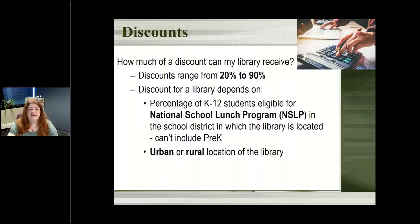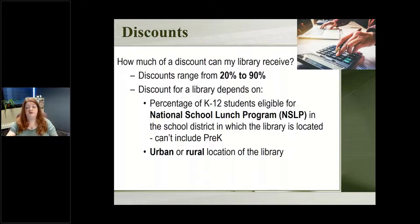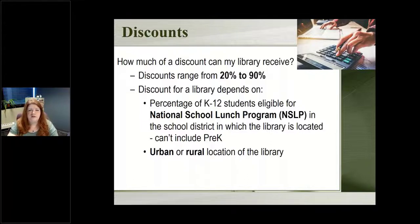So how much of a discount can your library receive? There's quite a range — you can get anywhere from 20% up to 90% off on your internet bills. Most of the libraries in Nebraska fall in the 60, 70, 80% range. This current year the average was 74% discount, which is a pretty big chunk of money. This is the first thing I tell libraries to look at before deciding to do it. If you've never done E-Rate before and you're wondering if it's something you should do and put the time into — because it is something you have to do every year with multiple forms — first check and see what discount you might be receiving.